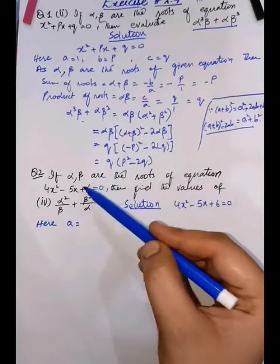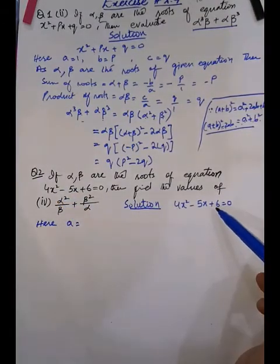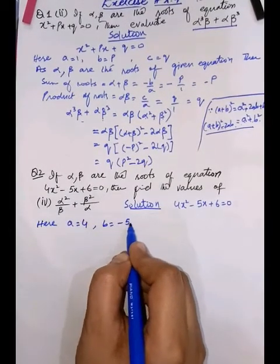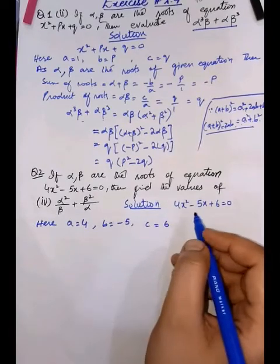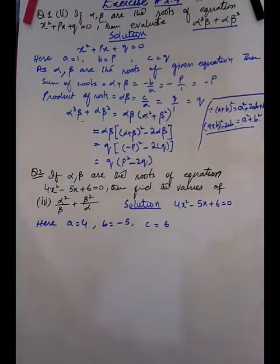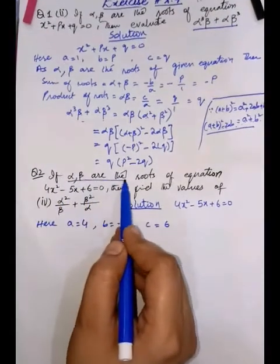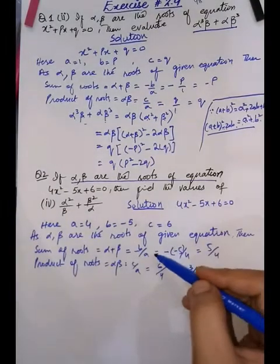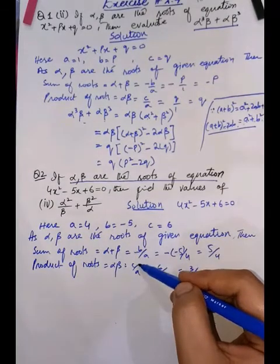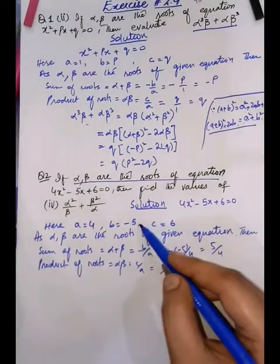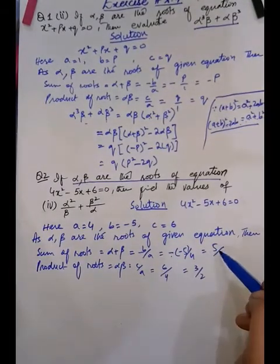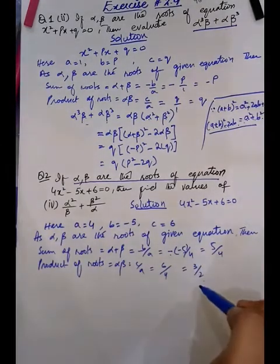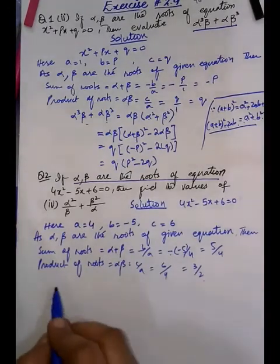Now moving to part 2: we are given the equation 4x² − 5x + 6 = 0. From here, a = 4, b = −5, and c = 6. Again we write: since alpha and beta are the roots of the equation. We find the sum of roots = −b/a = 5/4, and the product of roots = c/a = 6/4 = 3/2.